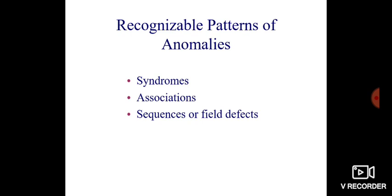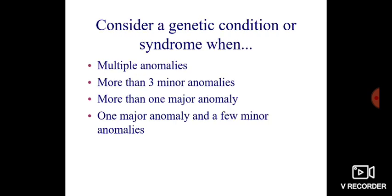Anomalies can have a recognizable pattern, which is then classified into syndromes, associations, sequences, or field defects. A syndrome is said to occur if there are multiple anomalies of which more than one is a major anomaly and more than three are minor anomalies.